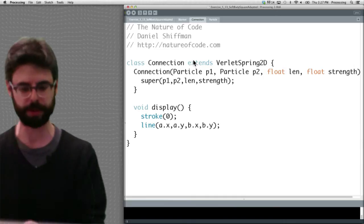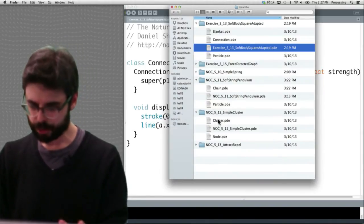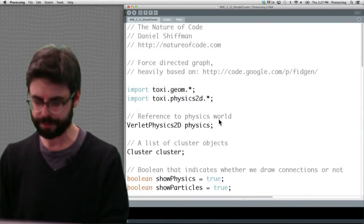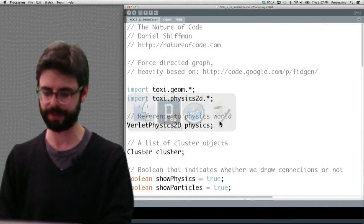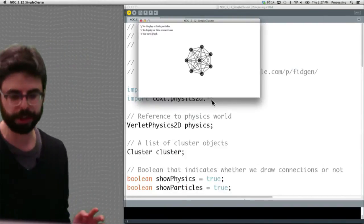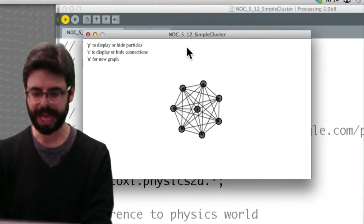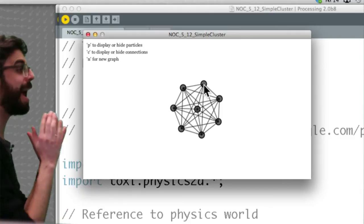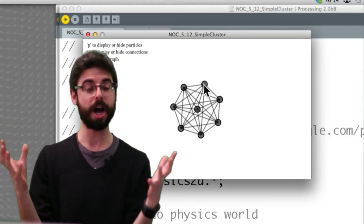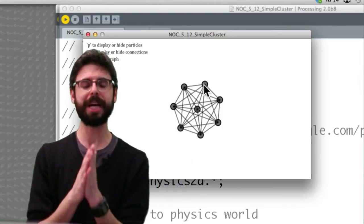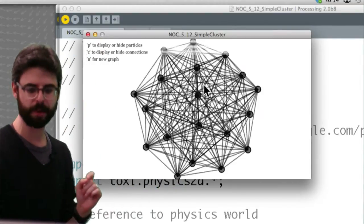What I have for you are two examples—5.12 and then one is an exercise, 5.15. This example shows a simple scenario where it makes a random set of particles, and every particle is connected to every other particle with springs with certain rest lengths and strengths.